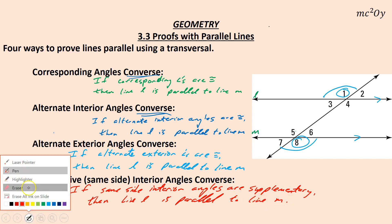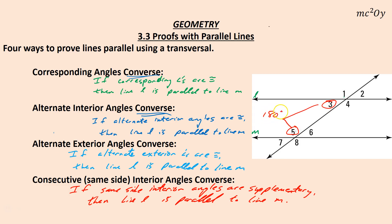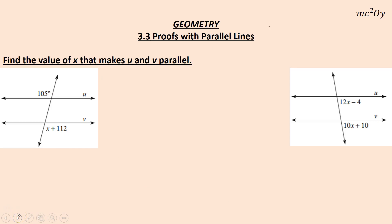The last one states: if same side interior angles — also called consecutive interior angles — are supplementary, meaning they add up to 180 degrees, then line L is parallel to line M. So if angles 3 and 5 add up to 180, their sum is 180, then lines L and M are parallel. Using that information, we can write proofs and make calculations.